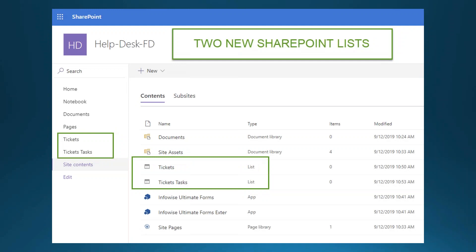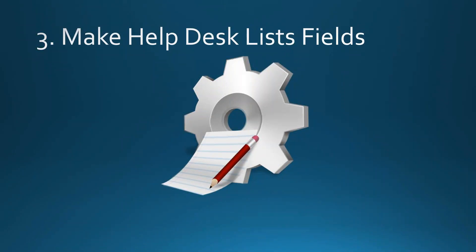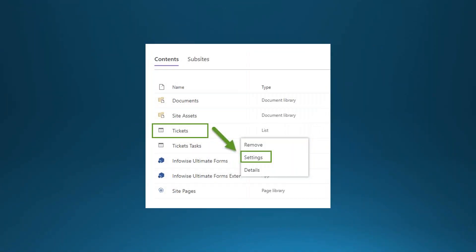This diagram shows a basic help desk process we're going to model. A user submits a ticket, it gets assigned, emails go out, it becomes in progress, then hopefully completes — or goes on hold or gets canceled. We'll go back to site contents to create these lists, and it's also useful to update the site's left navigation with links so lists and pages are easy to find.